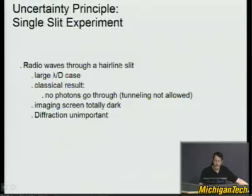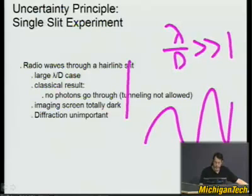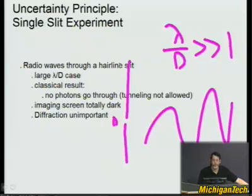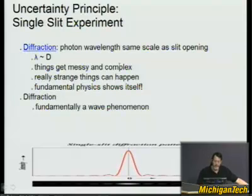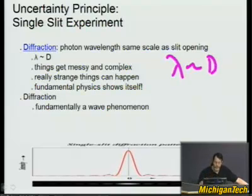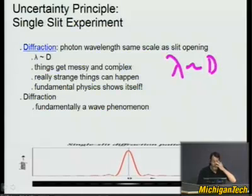The next extreme case is when lambda over d is large — much greater than one — so the wavelength of the photons is really large compared to the very small slit d. At that point, you're not going to get many photons going through the slit. The classical result is just darkness, and diffraction is unimportant because photons simply aren't going through. The interesting cases are when lambda is on the order of d — usually d is a few times lambda. At that point, things get messy and complex, and the real strangeness of quantum mechanics begins to come out, and the fundamental physics begins to show itself.